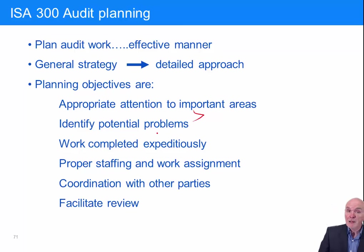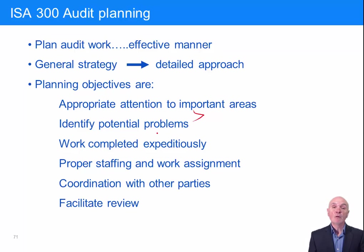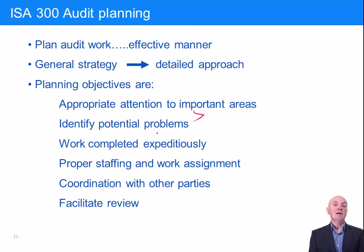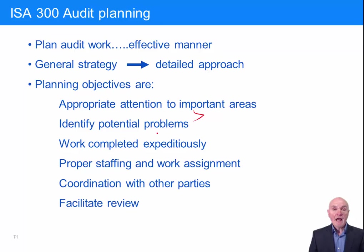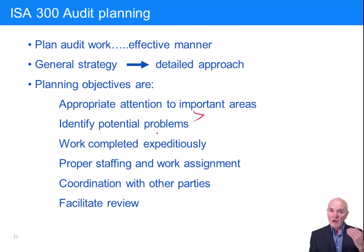Coordination with other parties. For example, if you're hoping internal audit will carry out some of the work, you have to liaise with them. Sometimes you need other parties to value inventory — in a jewelry shop you might want an independent valuer. If you're a property company, you may need someone to come and value the buildings. You have to coordinate these people to come in at the right time so they know what assets are there at year end and can produce their report in time to complete the audit.